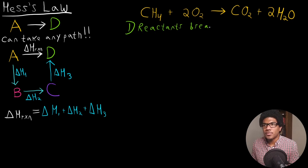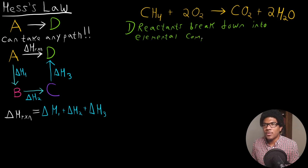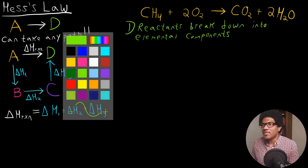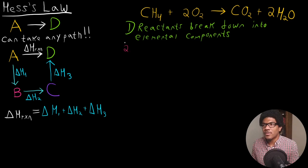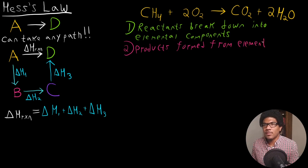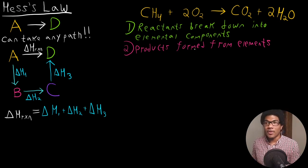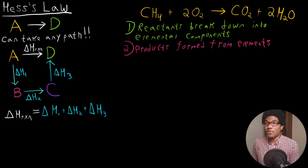So reactants break down into elemental components — that's going to be the first step of our path for this reaction. The second step is just those elemental components forming the products. Essentially, these are the two steps that you're going to break any chemical reaction down into.